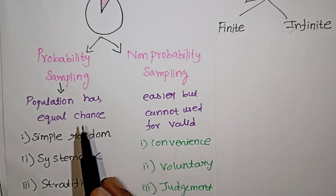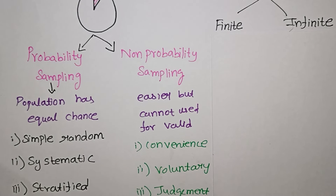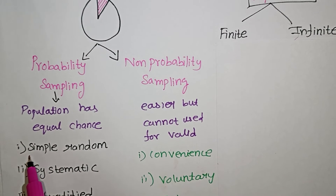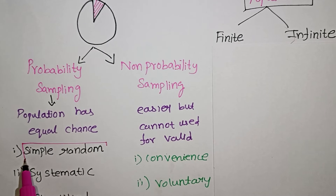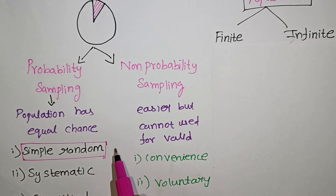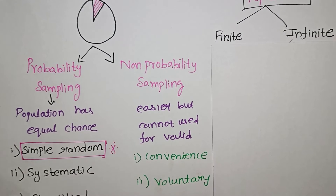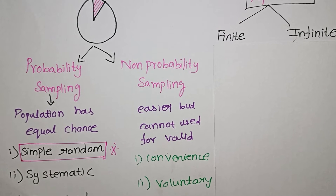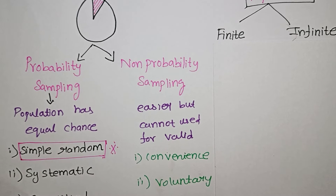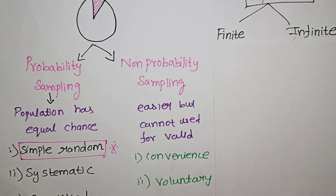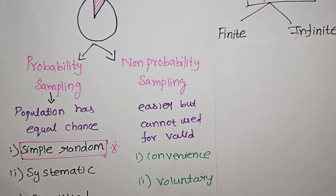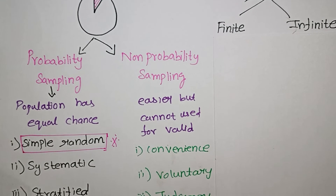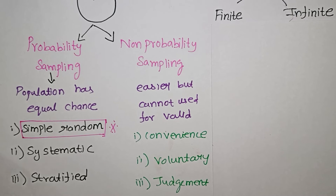The first type of probability sampling is simple random sampling. For example, with a thousand employees, you randomly select members from the thousand, and the result will be correct.